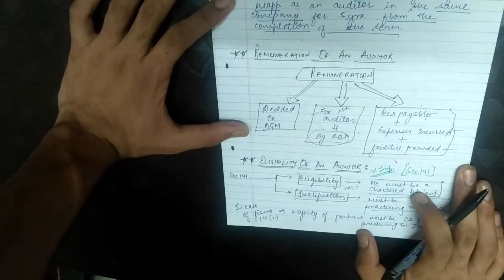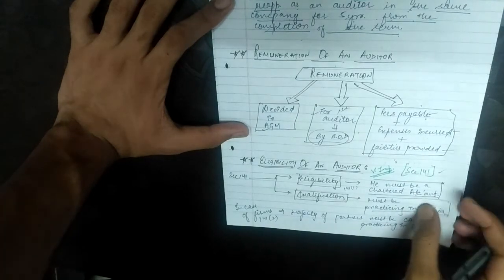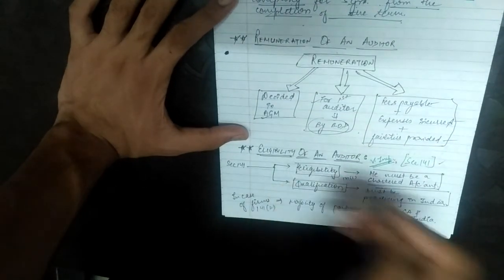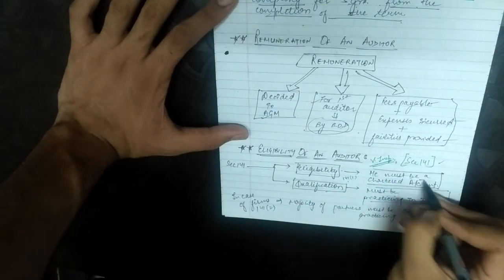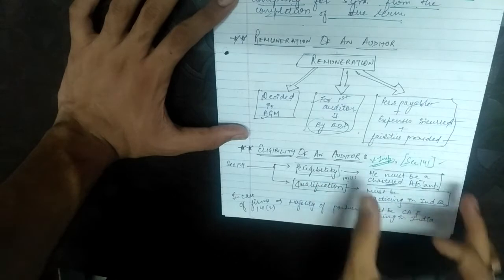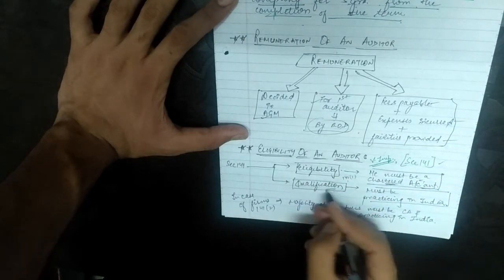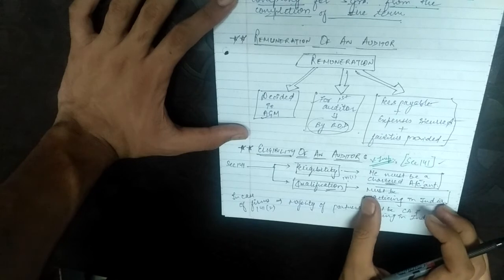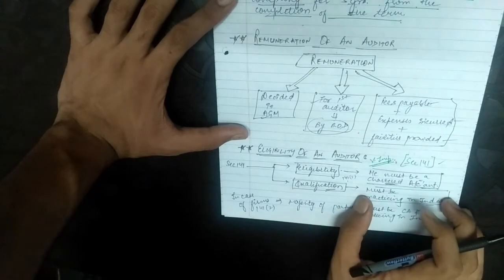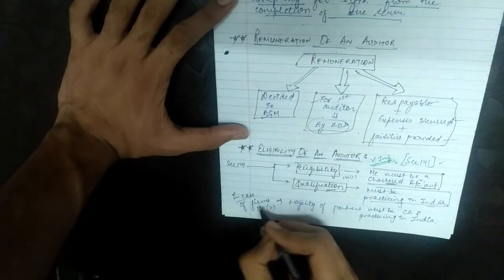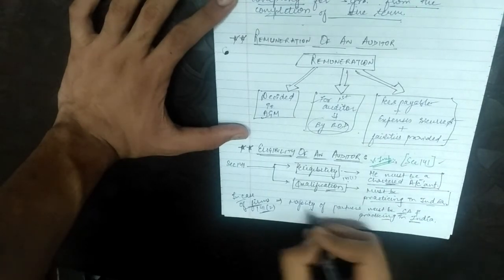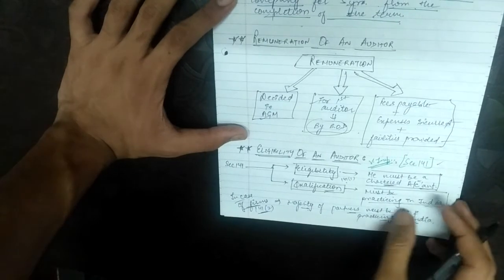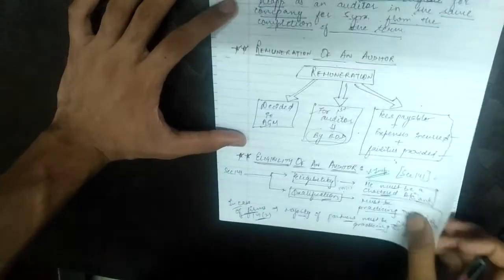Now, eligibility of an auditor — very important from an examination point of view — covered under Section 141. Section 141 subsection 1: the auditor must be a Chartered Accountant practicing in India. Section 141 subsection 2: in case of firms, the majority of partners must be Chartered Accountants practicing in India.